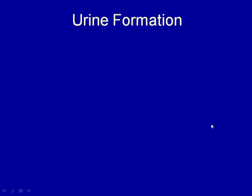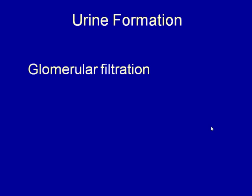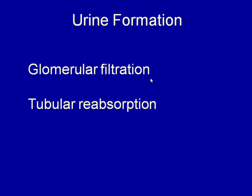Urine formation is a three-step process. We filter at the glomerulus to make a glomerular filtrate — that is glomerular filtration, the first step. Then we have tubular reabsorption, and the third step is tubular secretion.